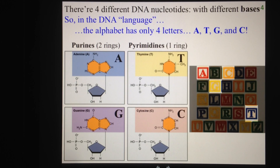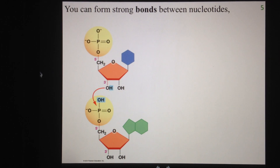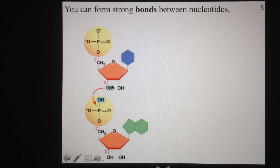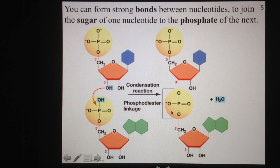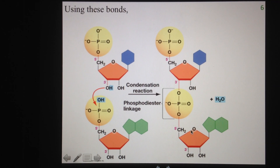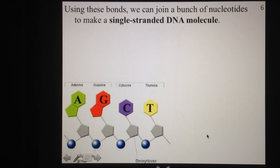Everything we write is going to be spelled out in these four letters. With single DNA nucleotides, we can actually form strong bonds between them. With the right enzymes, we can join the sugar part of one nucleotide to the phosphate part of the next, and form a phosphodiester linkage that joins these two bonds together. This is a covalent bond that's quite strong. Using these bonds, we can string together a whole bunch of nucleotides to make a single-stranded DNA molecule.